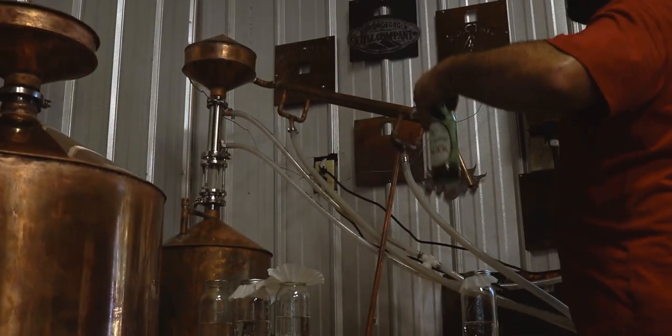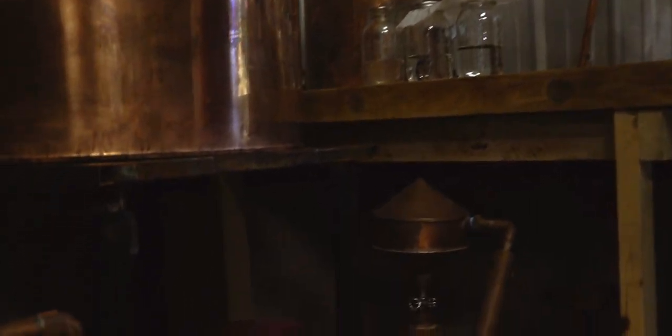Now when I run the thumper and the mason jar thumper, I won't lose any flavor because it's not going to reflux, it's not going to re-distill. I'm going to get a higher proof here.